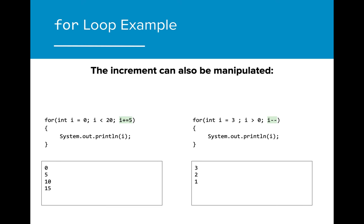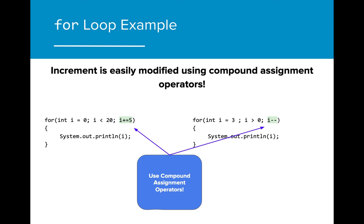We can also manipulate the increment value. On the left, we are increasing the value of i by five each time the for loop executes, and on the right, the value of i is actually decreasing each time through the for loop. To change the increment, oftentimes we rely on compound assignment operators. If you need a refresher on those, go back to lesson 1.4.